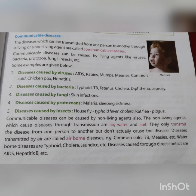Communicable disease means संचारी बीमारियां — ये वे बीमारियां होती हैं जो एक व्यक्ति से दूसरे में living या non-living agents द्वारा फैलती हैं। Living agents जैसे virus, bacteria, protozoa, fungi, insects द्वारा ये फैलती हैं। Virus से AIDS, rabies, mumps, measles, common cold, chickenpox, hepatitis; bacteria से typhoid, TB, tetanus, cholera, diphtheria, leprosy; fungi से skin infections; protozoa से malaria और sleeping sickness; housefly से typhoid fever और cholera; rat flea से plague होता है।